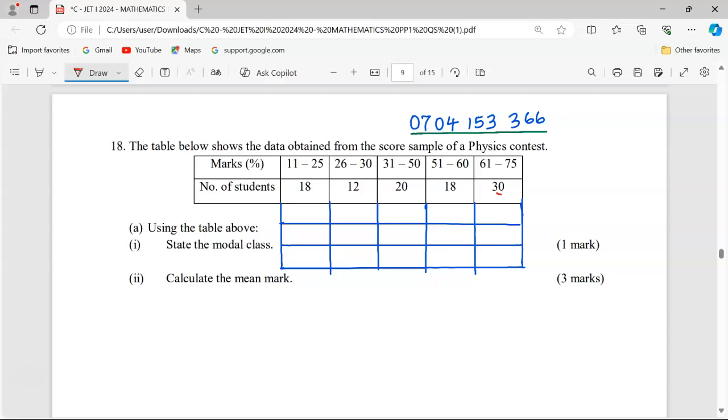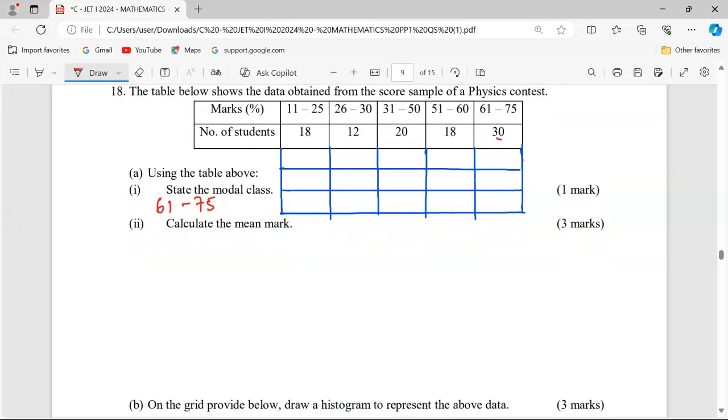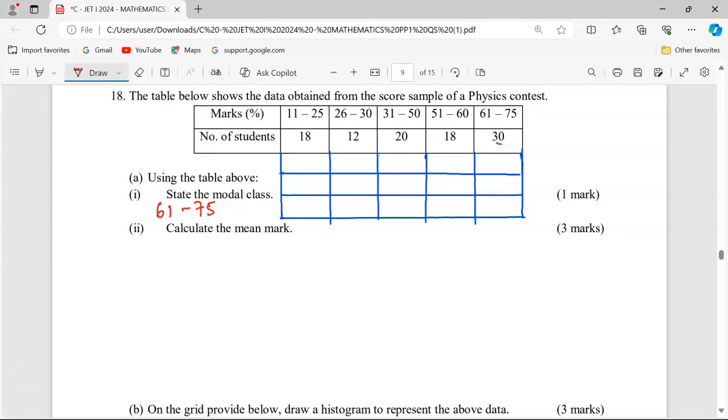Second part, we are calculating the mean mark. To calculate the mean, we need to come up with x, the midpoints of each class. To get the midpoint, we take the lower limit plus the upper limit and divide by 2. For example, in the first class, 11 plus 25 gives us 36, divided by 2 is 18.